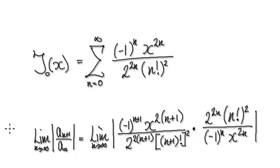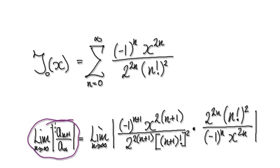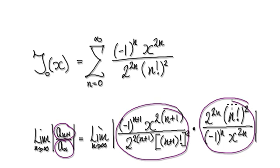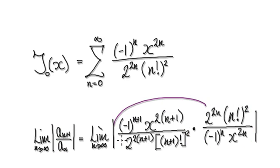To find the domain, we're going to use the ratio test. When it comes to the ratio test, we always need to compute this value here. We need to get a(n+1), which is this term here, divided by a(n). Dividing by a(n) is the same as multiplying by the reciprocal of a(n), which is this.